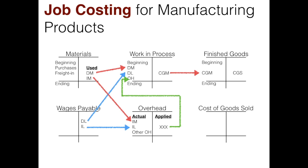In work in process we now have direct materials, direct labor, and applied overhead. Once the product is completed it becomes cost of goods manufactured and moves into finished goods, where it sits until it is sold. When a sale is made we record two journal entries: one for revenue and one for cost of goods sold, debiting cost of goods sold and crediting finished goods.